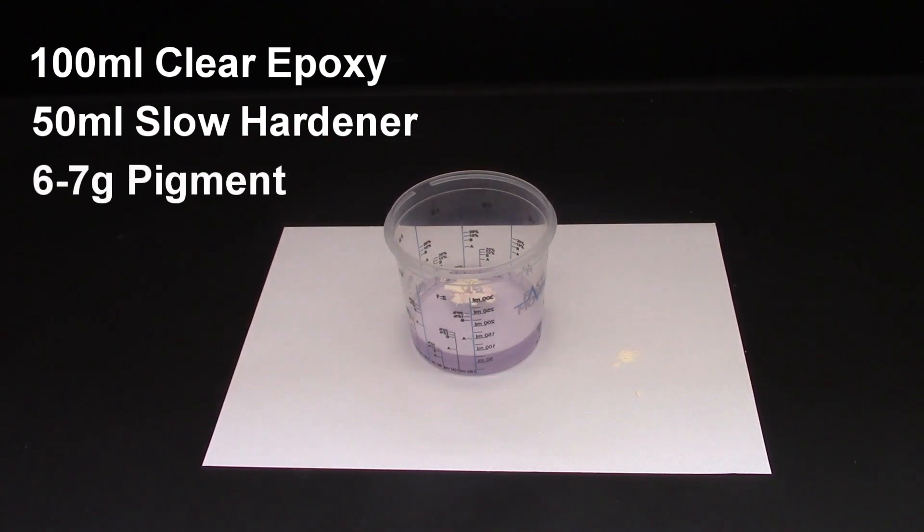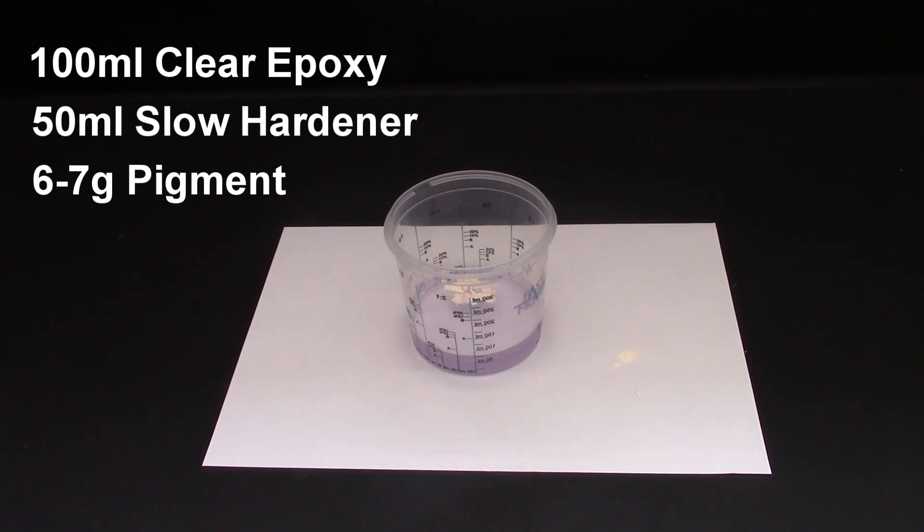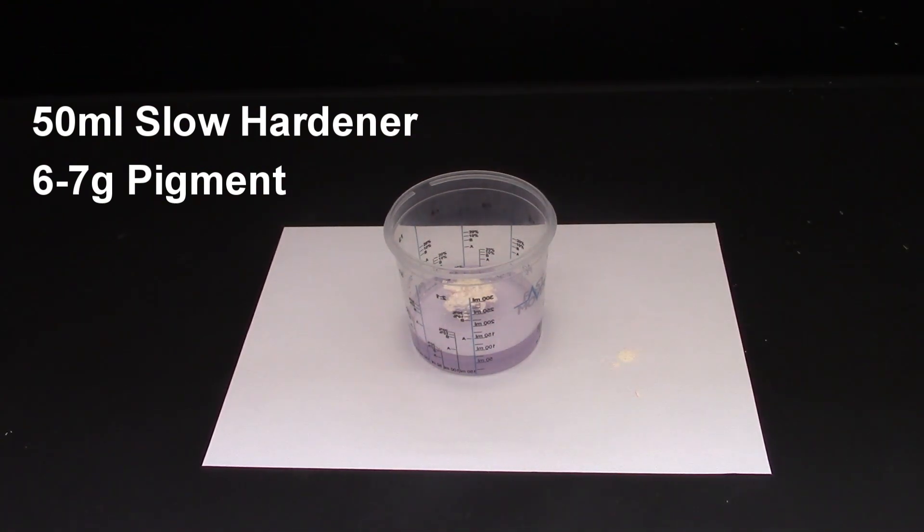Then we added approximately six to seven grams of photochromic pigment powder magenta to the resin.